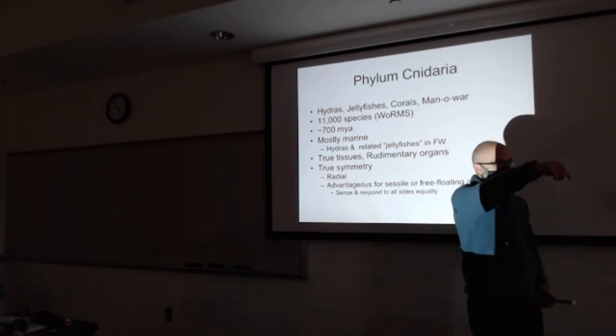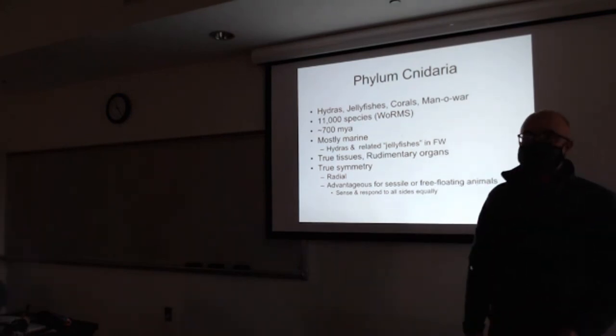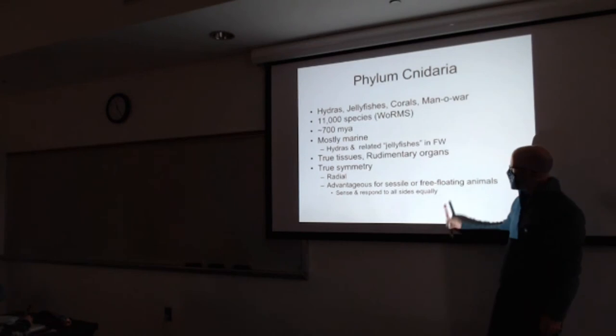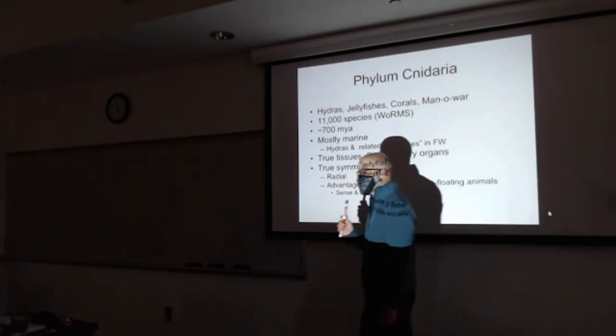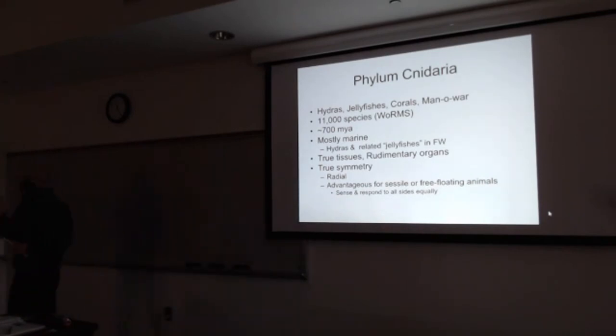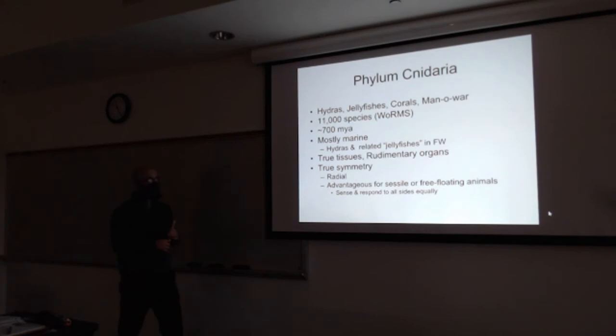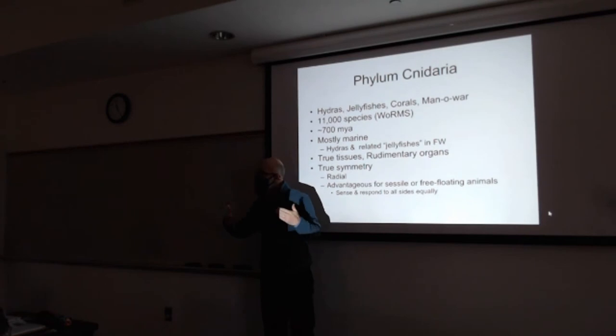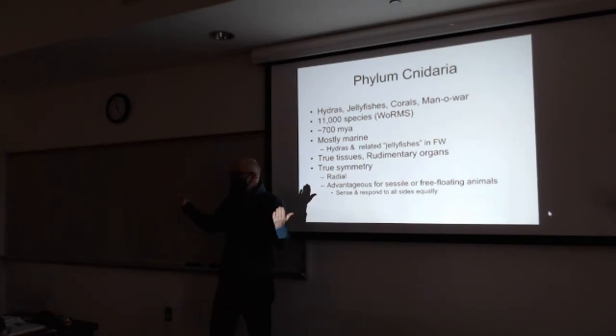They are truly radially symmetrical. Why is this adaptive to be, I call it the pizza pie symmetry? What type of lifestyle does that suit if you're attached or you're free-floating, as opposed to animals that move directionally? We're bilaterally symmetrical, but we move. Most animals are bilaterally symmetrical in that they move and they have that cephalization. Their head concentrates their sensory organs.